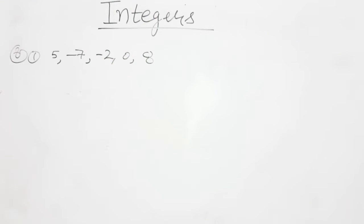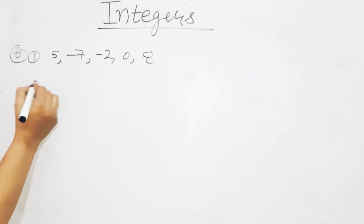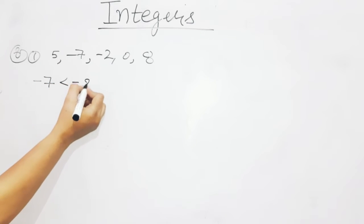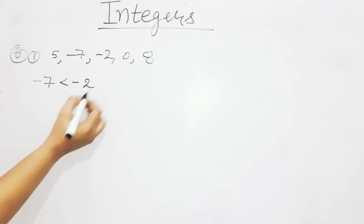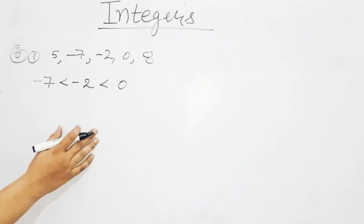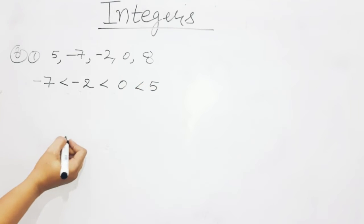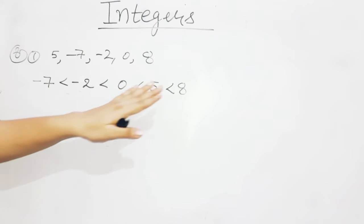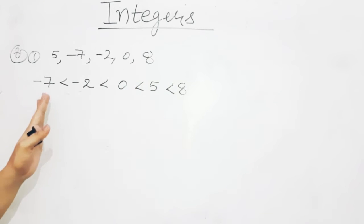Now you all have to tell me which is the smallest integer. I have already explained that 0 is always greater than any negative integer. That means minus 7 is the smallest one. After minus 7, minus 2 comes next, then 0, then 5, and the greatest is 8. So from minus 7 to 8, I have arranged them in increasing order.